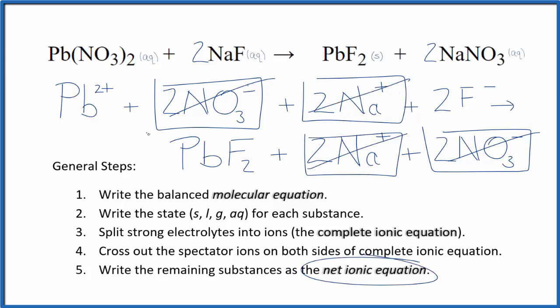What's left, that's the net ionic equation for Pb(NO3)2 plus NaF. I'll clean this up and write the states. We'll have our net ionic equation.